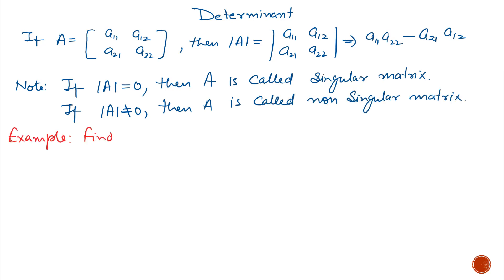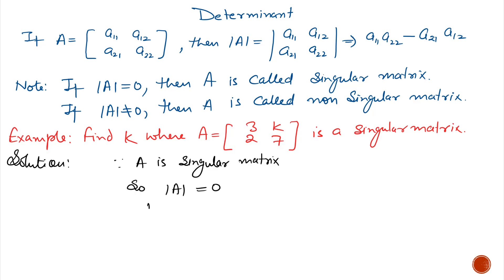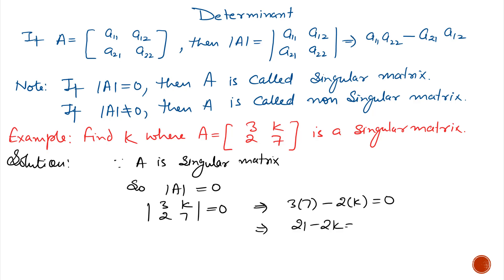Example 1: Find k where a 2 by 2 matrix [3, k, 2, 7] is a singular matrix. It is given that A is a singular matrix, so determinant of A equals 0. Now determinant of [3, k, 2, 7] equals 0, which gives upper diagonal minus lower diagonal: 3 multiplied by 7 minus 2 multiplied by k equals 0. So 21 minus 2k equals 0, and the value of k equals 21 by 2.